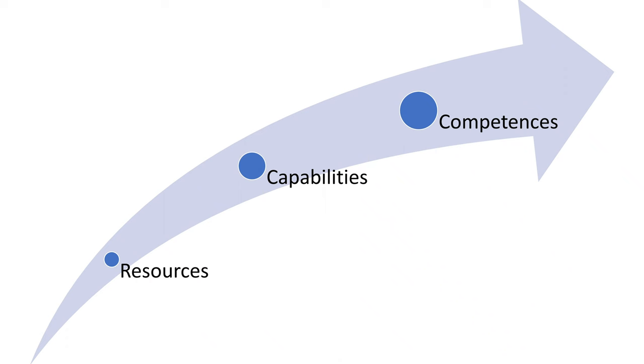As a recap: resources are the source of your firm's capabilities, and the capabilities that set your firm apart and give you a competitive advantage are your competencies. Now think about your company — what are the most valuable resources you have? What are the capabilities your company builds with those resources? And what are the top one or two capabilities that really give you a competitive advantage — your competencies? That's it for this video. Take care.